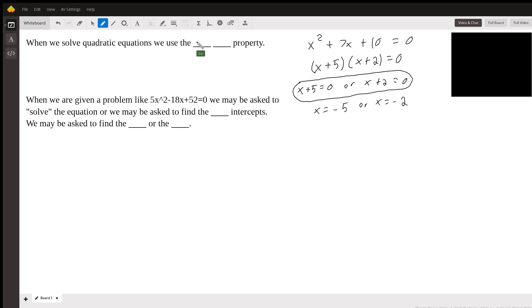So this is called the zero product property. Now here's the second part: when we are given a problem like 5x^2 - 18x + 52 = 0, we may be asked to solve the equation, or we may be asked to find the blank intercepts.